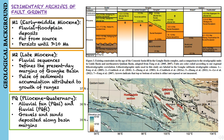Along the margins of the Gonghe Basin complex, the uppermost strata consists of coarse-grained fluvial conglomerates that prograde into the basin. For example, in the Chaka Basin, this upper package is around 300 meters of alluvial fan deposits that range in age from around 4.5 million years ago to less than 3 million years ago.